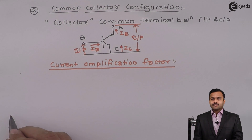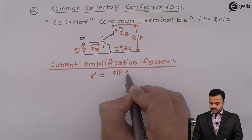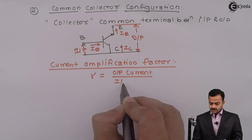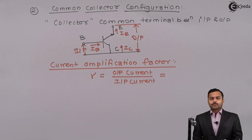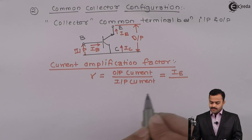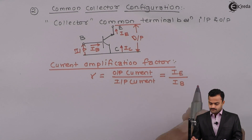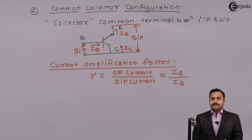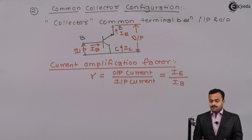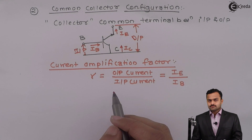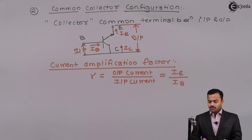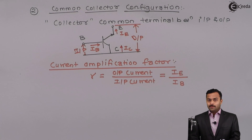The parameter for the CC configuration is again the current amplification factor, denoted by gamma. It is the ratio of output current to input current — output current is the emitter current IE, and input current is the base current IB. Gamma is significantly higher, so current amplification does occur, but there is a restriction on voltage amplification. Therefore, the common collector configuration is not used frequently.